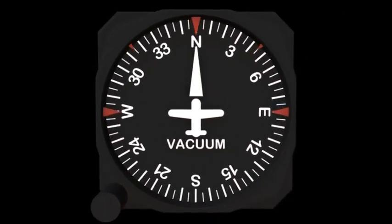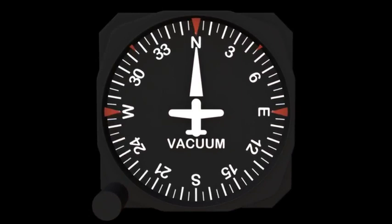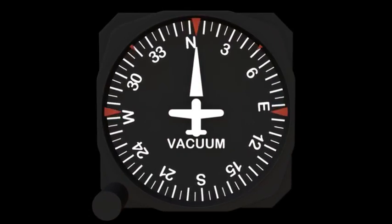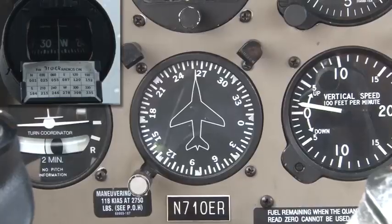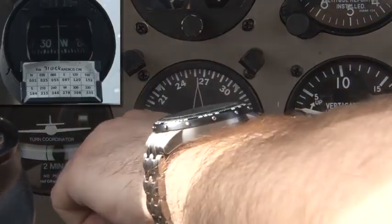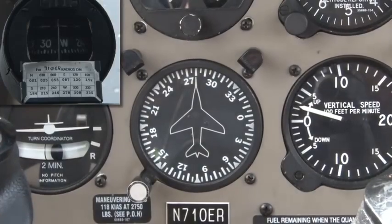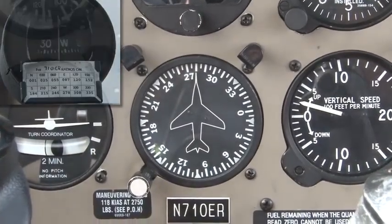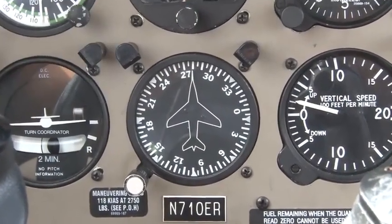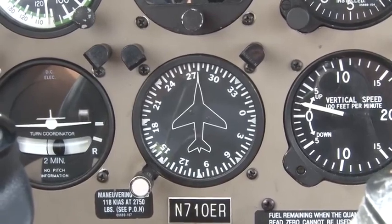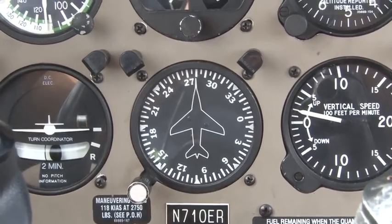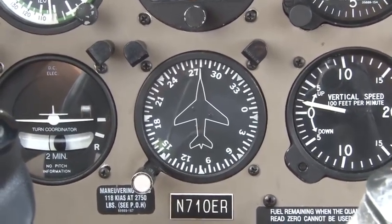Note that, due to friction and precession, the heading indicator may slowly drift away from the correct heading. Because of this, the pilot should double-check the accuracy of the instrument against the magnetic compass and realign as necessary. This should be done roughly every 15 minutes or so. Keep in mind, if the vacuum pump is not producing sufficient suction when the engine is idling, the drift may be greater.